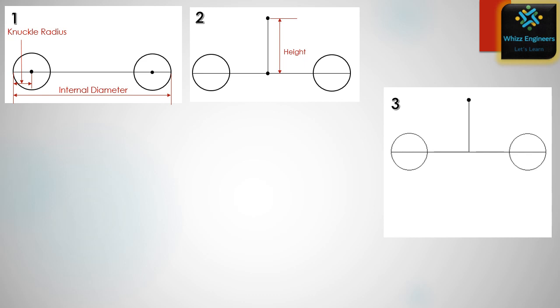From this top point, we have to mark the crown radius just perpendicular below that point. From this point, we have to draw one circle which will be touching these small circles of knuckle radius.